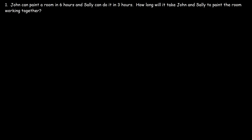John can paint a room in six hours and Sally can do it in three hours. How long will it take John and Sally to paint the room working together? There is a simple formula that can help you to get the answer.